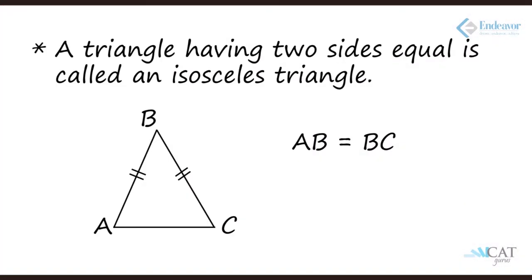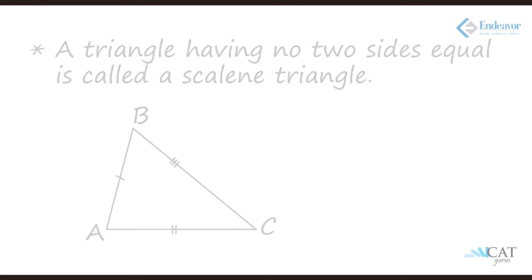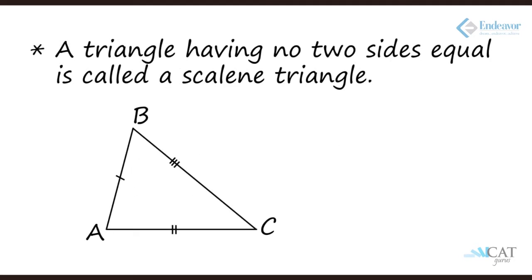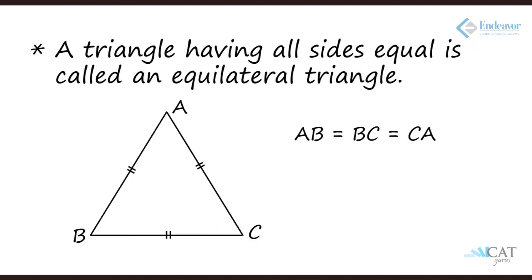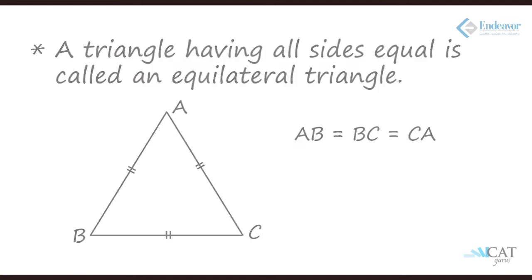Let us see what all different properties are there. Now if suppose it has two sides which are equal — suppose AB and BC are equal — then the triangle is called an isosceles triangle. It can be for any two sides. If none of the sides are equal then it is called a scalene triangle. If all three sides are equal — say AB, BC and CA — then it becomes an equilateral triangle.